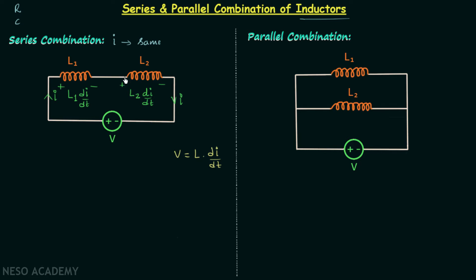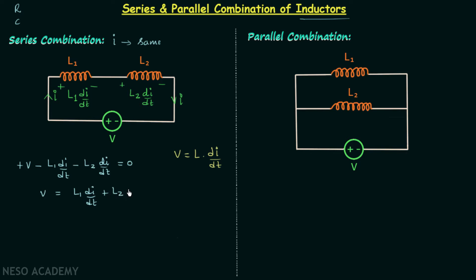We will apply KVL in this loop to calculate the equivalent inductance. After applying KVL we have: V minus L1·di/dt minus L2·di/dt equals 0. So we can say the voltage V is equal to L1·di/dt plus L2·di/dt.